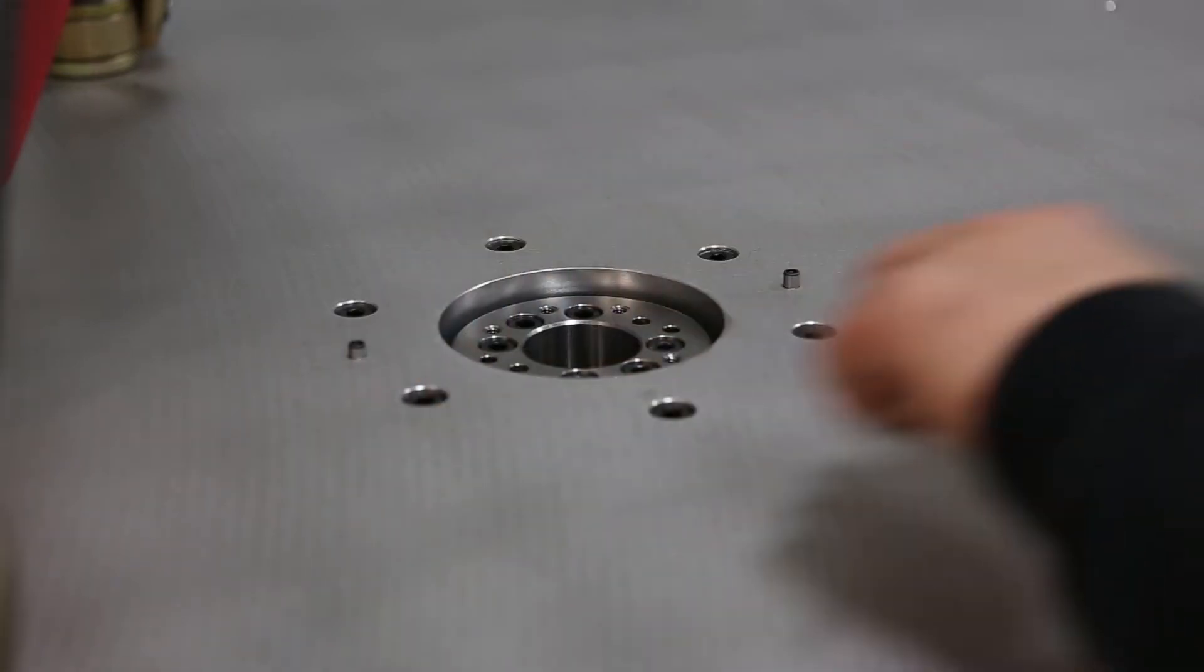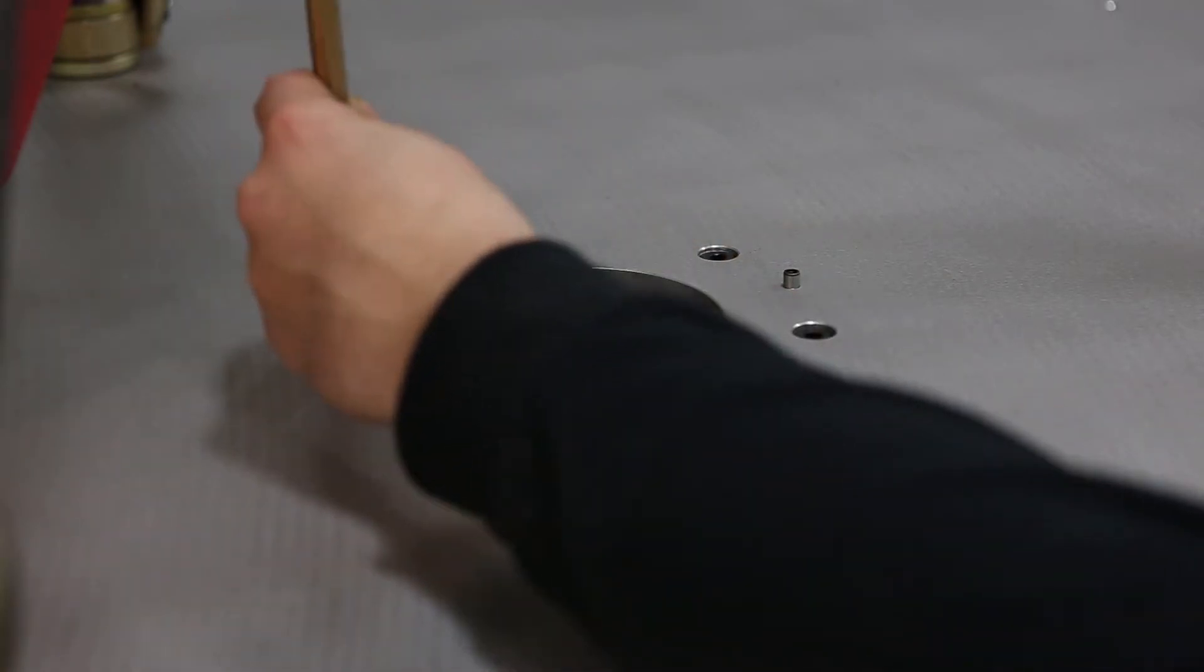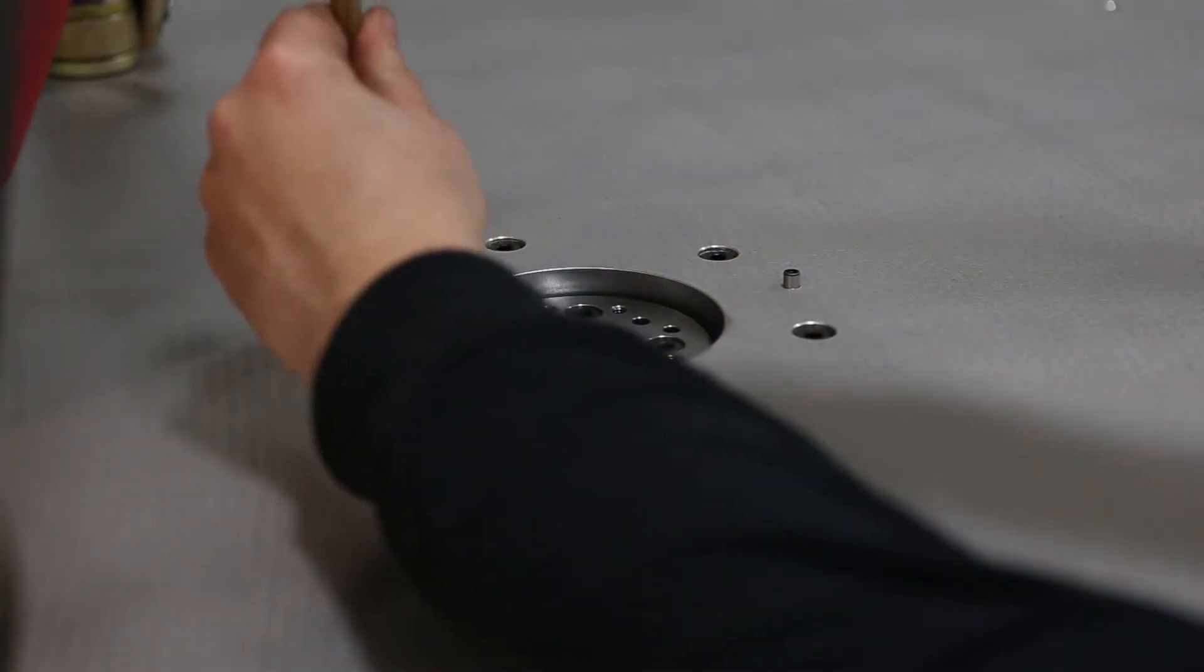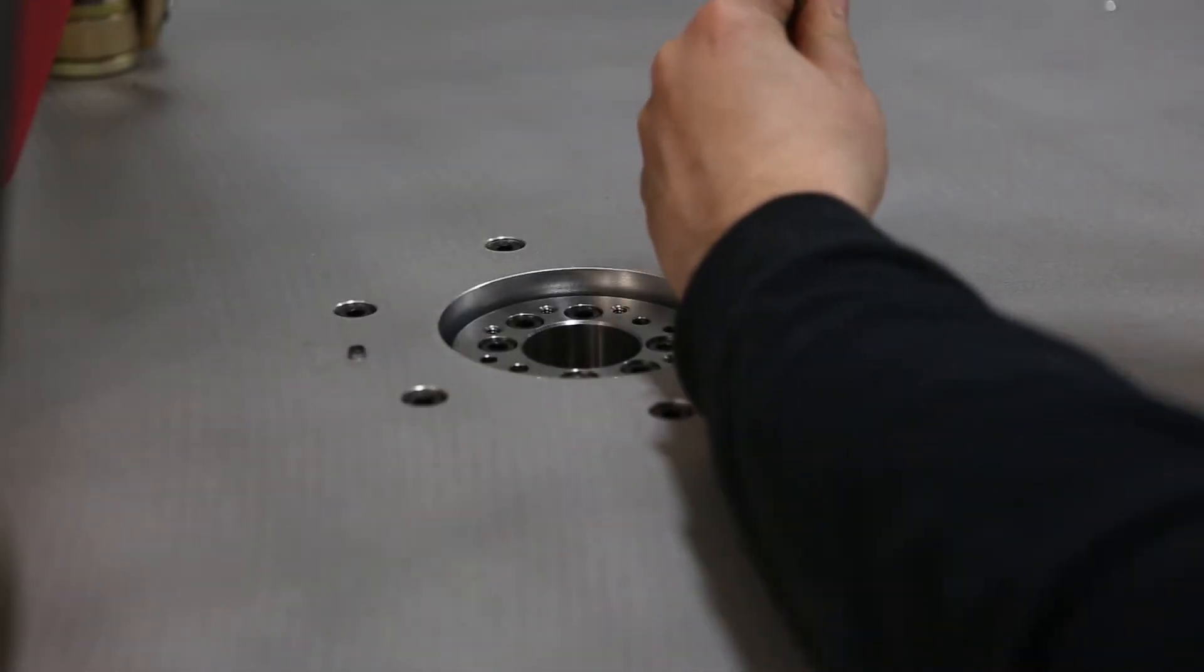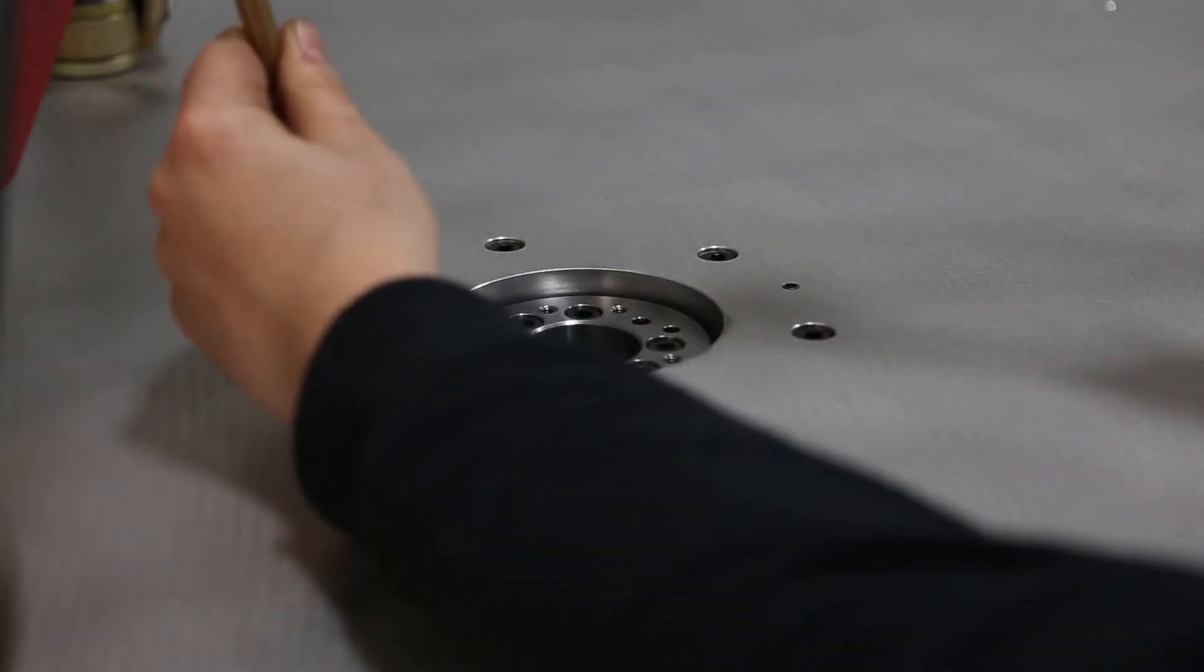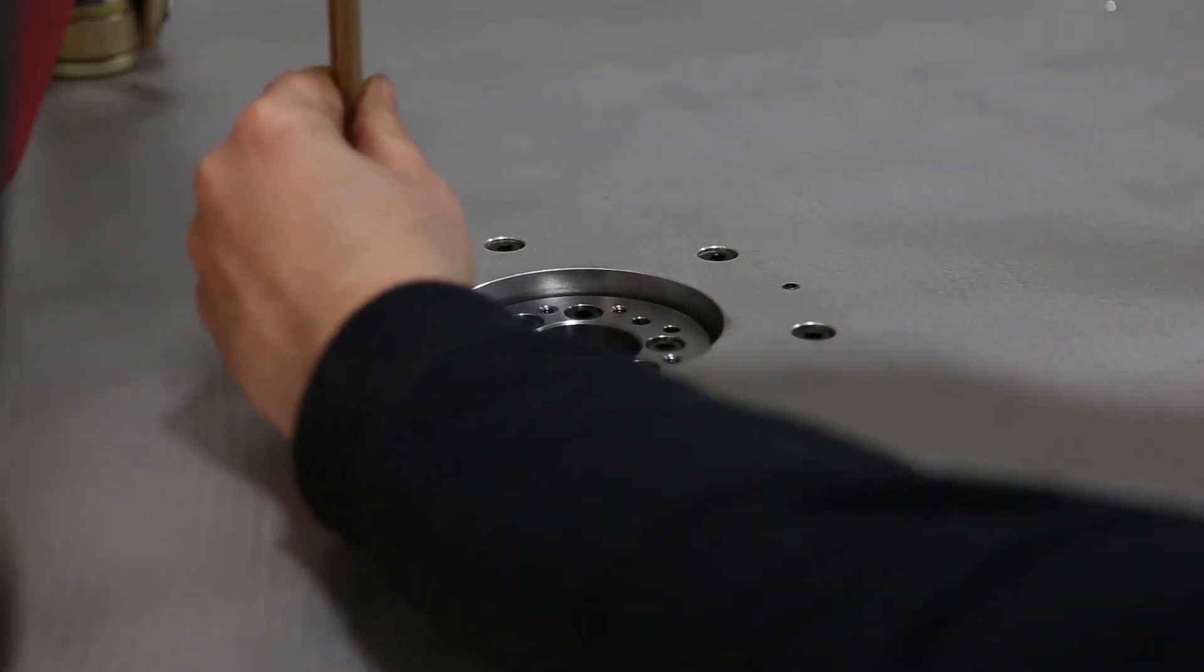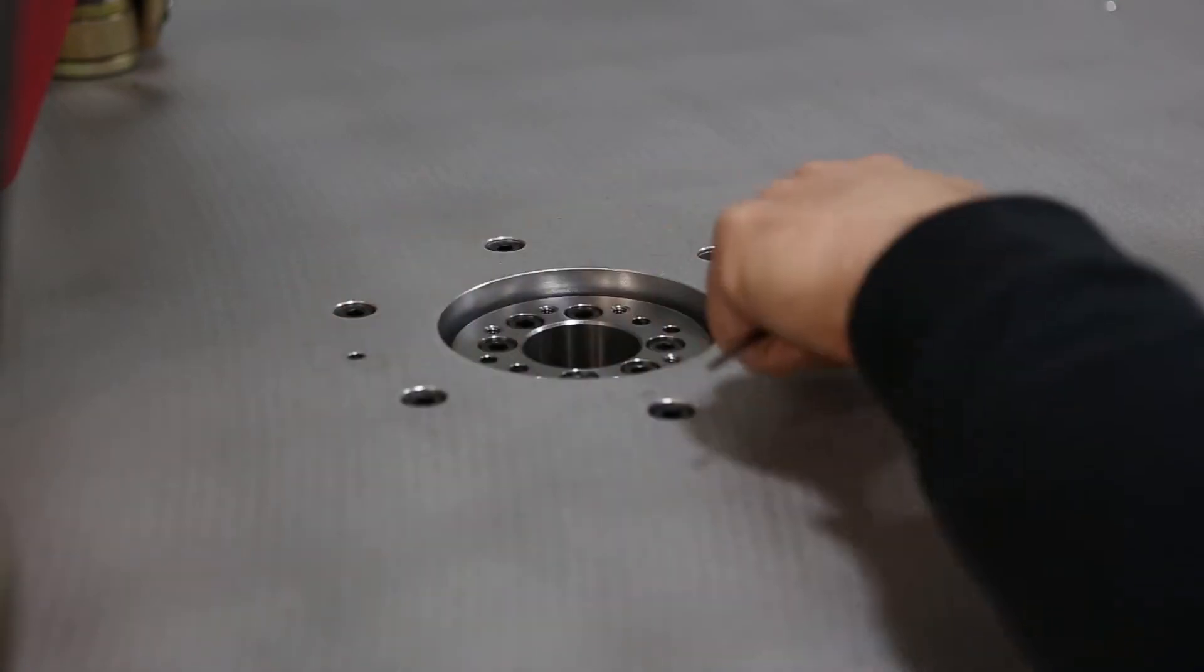Now that your M8 screws are slightly tight you can finish installing your dowel pins so they're flush with the top of your table.